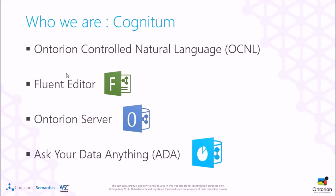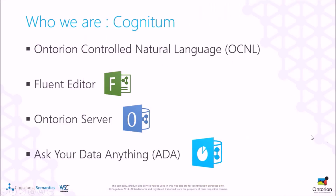The main products we are developing are Fluent Editor, an editor for knowledge management used to create and share ontologies with other people. Then there is the Ontarian server, a scalable server for knowledge management that can be used together with a graph database. And then there is Ask Your Data Anything, a product that allows you to add semantic data on top of existing data, and this semantic layer is used to better interpret the data you have.